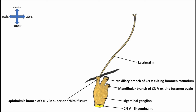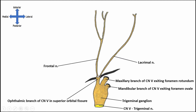Most laterally, we have the lacrimal nerve, which takes sensory axons all the way out to the lateral eyelid and a small patch of the lateral forehead. We have the large frontal nerve going right along the middle superior portion of the orbit. It splits into the supraorbital and supratrochlear nerves, conveying sensation from a pretty broad stretch of the forehead.